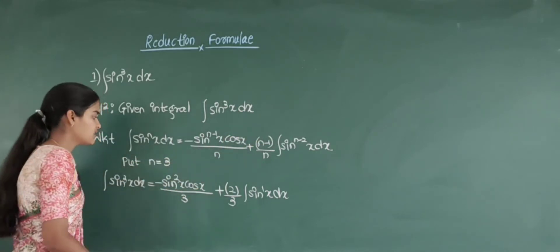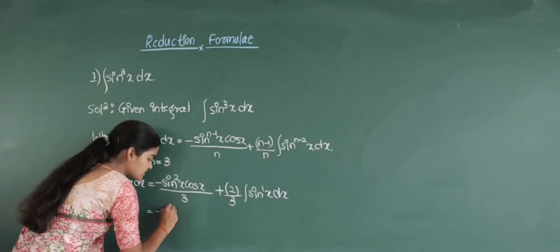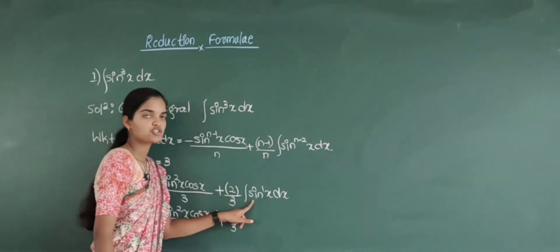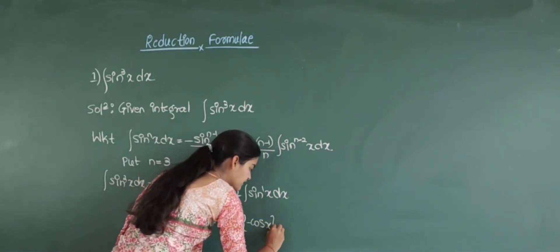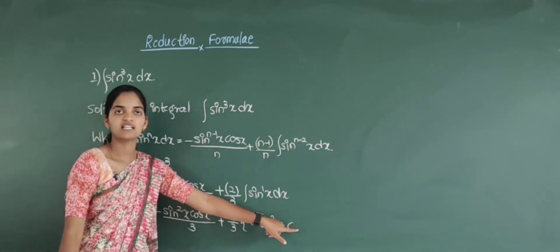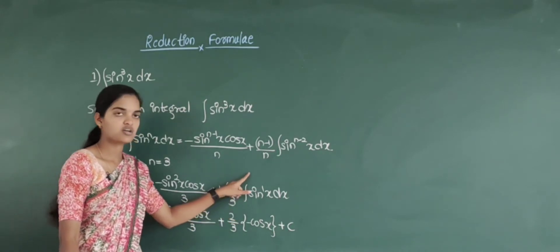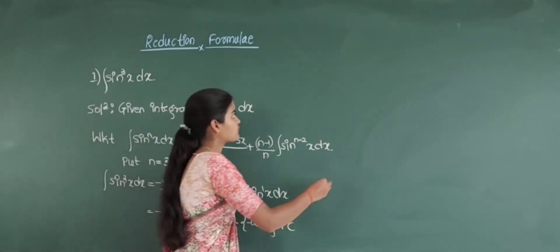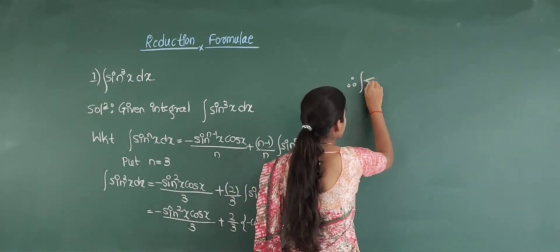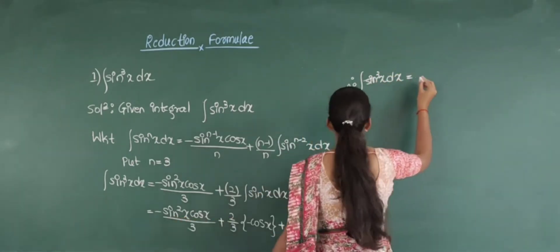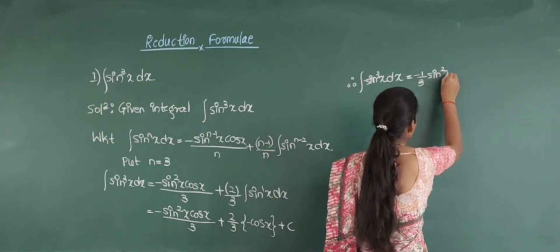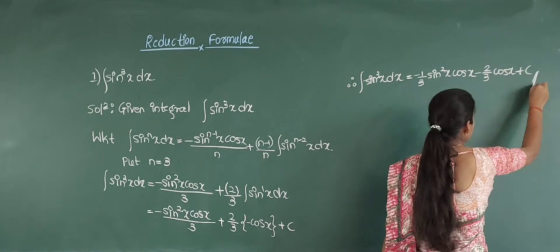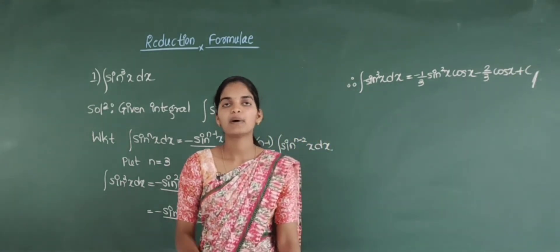Now simplify this. That is equal to minus sin square x cos x divided by 3, plus 2 by 3 into integration of sin x, which is minus cos x — and don't forget to write plus c, the integration constant. Since the integration is indefinite, meaning limits are not there, after integration you always add the integral constant c. Therefore, integration of sin cube x into dx is equal to minus 1 by 3 sin square x into cos x, minus 2 by 3 cos x, plus c.